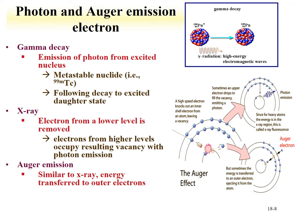Photons are generally emitted due to gamma decay — either from a metastable nucleus such as technetium-99m, where a long-lived excited nuclear state de-excites by emitting a photon, or from alpha or beta decay to an excited daughter state, which then de-excites through photon emission. X-rays are also a possible route for photon emission, where an electron from a lower energy level is removed and electrons from higher levels fill the vacancy, emitting a photon. Auger electrons are similar to X-ray emission, except an outer electron is emitted with the energy of the electronic transition rather than a photon.